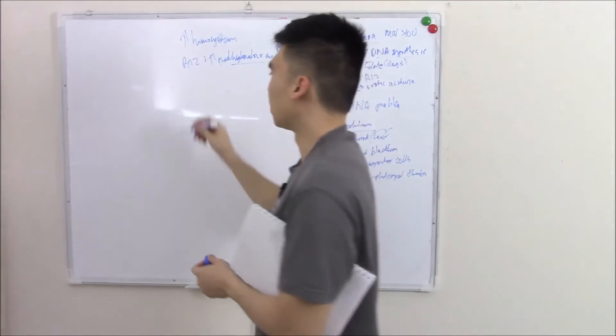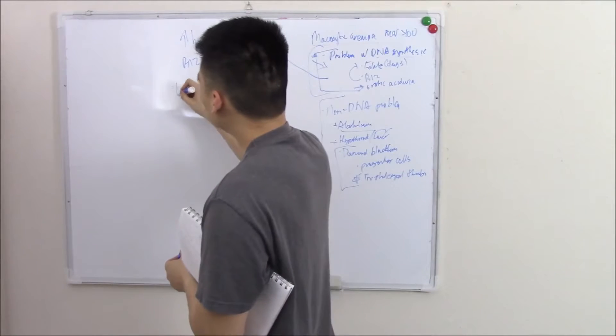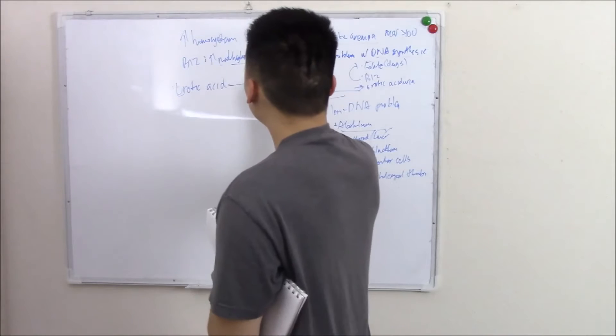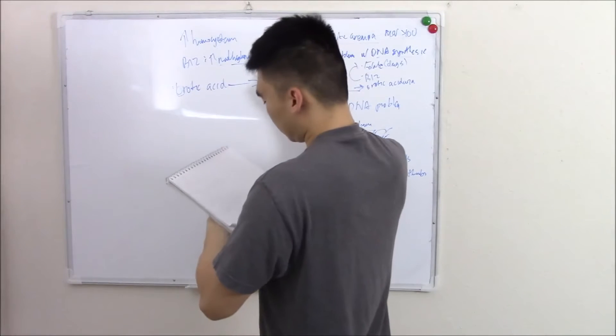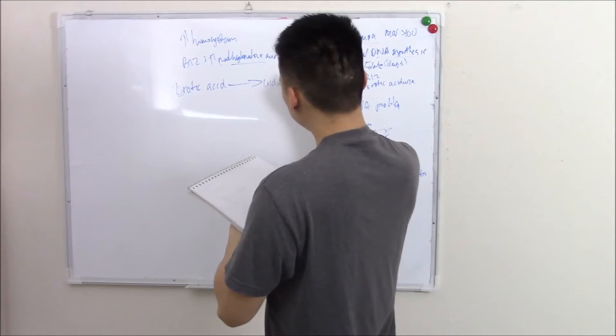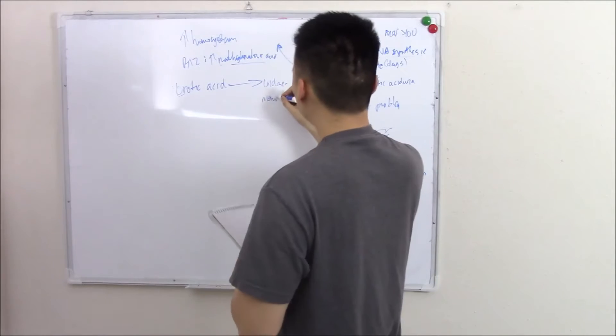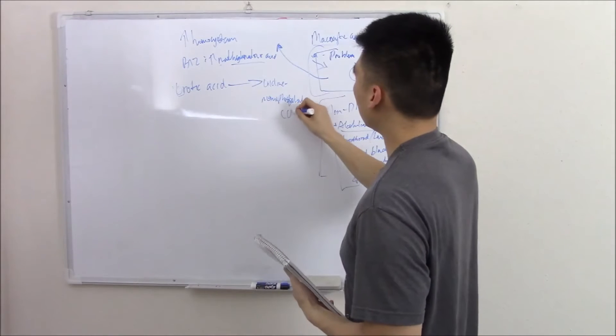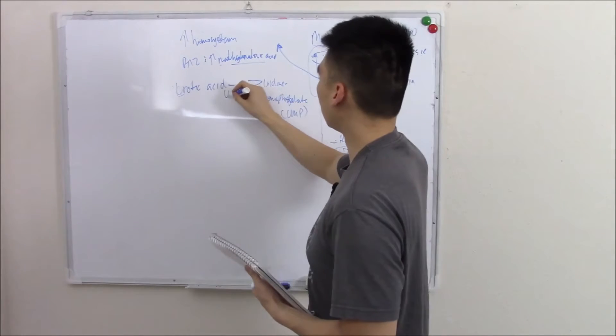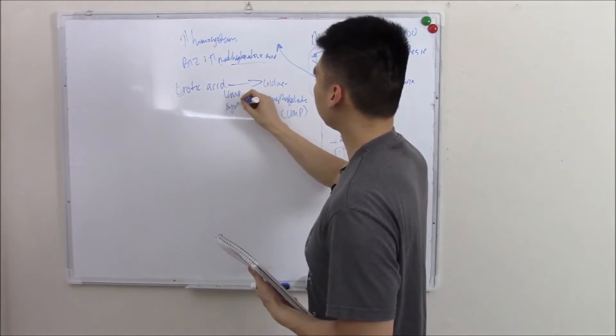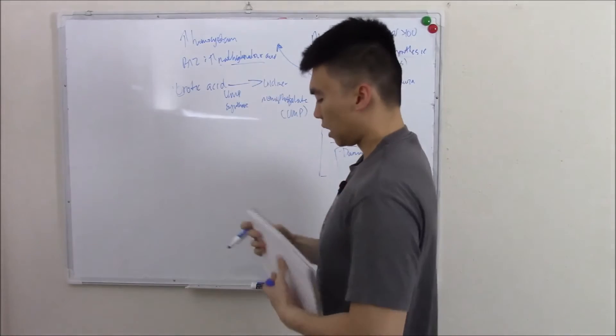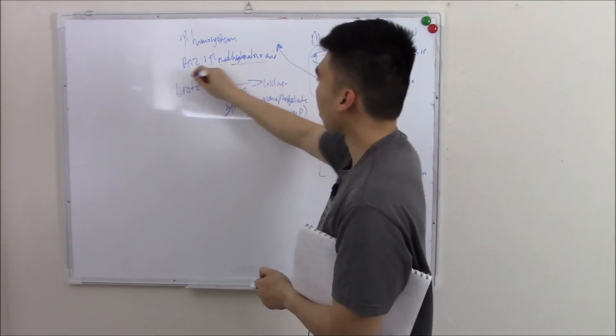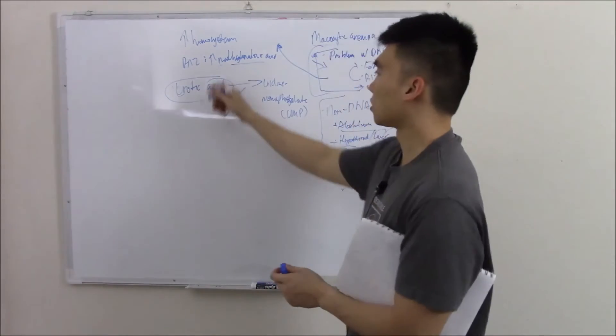you have something called orotic acid, and that becomes uridine monophosphate or UMP via the enzyme UMP synthase.